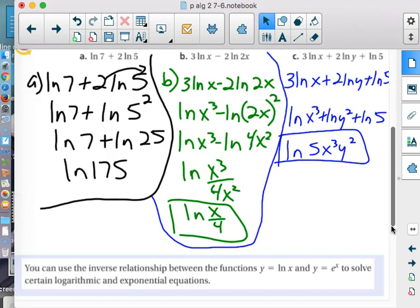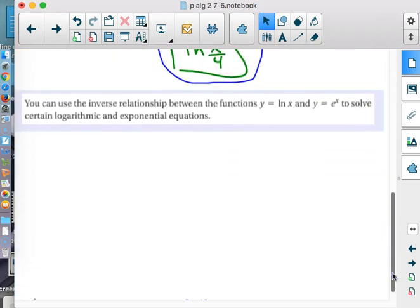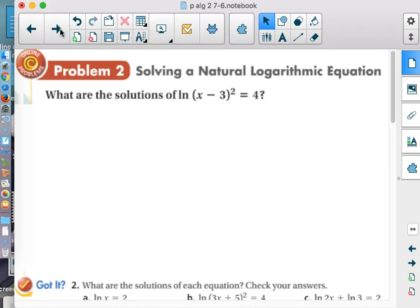Condensing. Notice we're using the exact same rules that we did when we used logarithm of base 2, logarithm of base 10, logarithm of base 5. It's still the same rules. Multiplication came from a power. If we saw subtraction, that was division. If we saw addition, that was going to be multiplication.